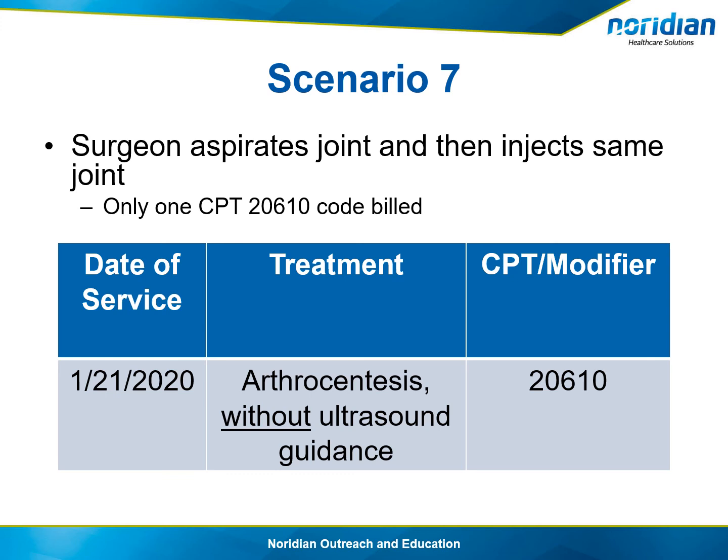In scenario 7, if the surgeon aspirates a joint and then injects the same joint, only one CPT 20610 should be billed. Code 20610 encompasses both the aspiration and injection — these cannot be billed as two separate procedures.